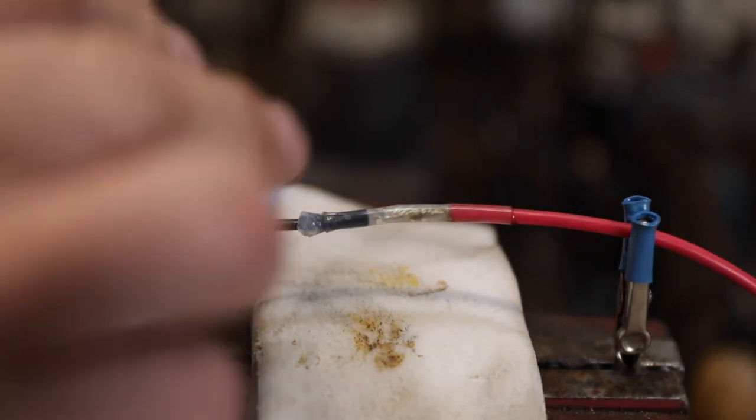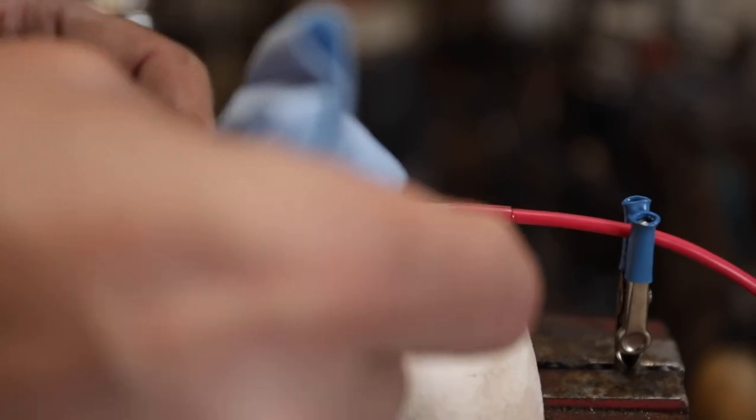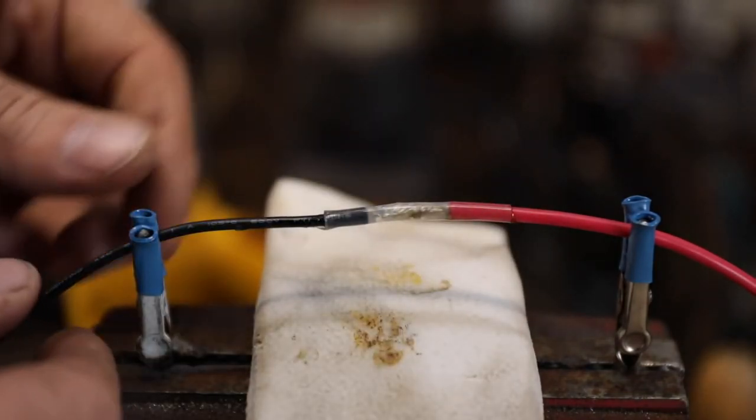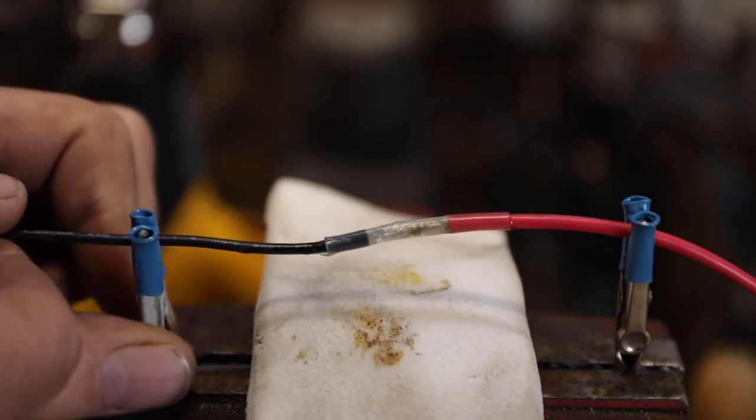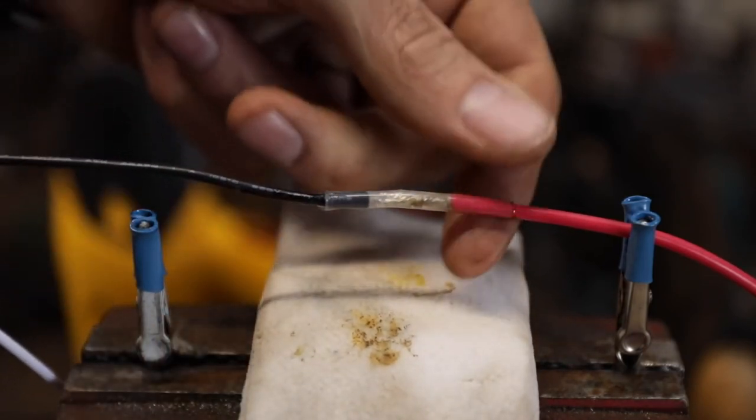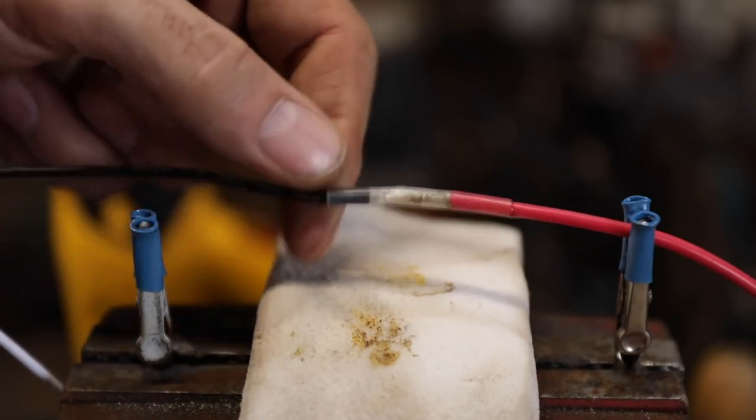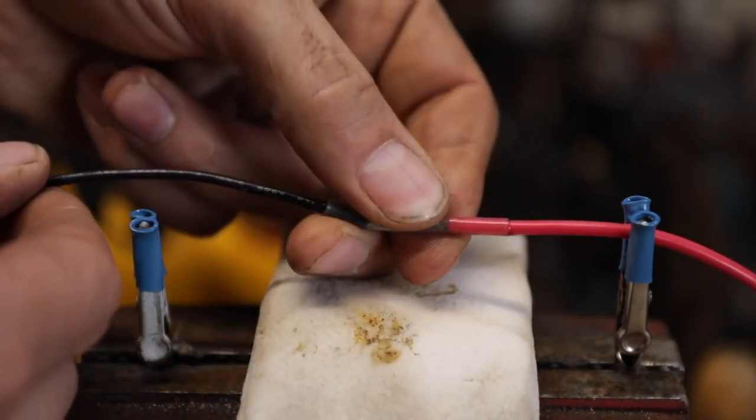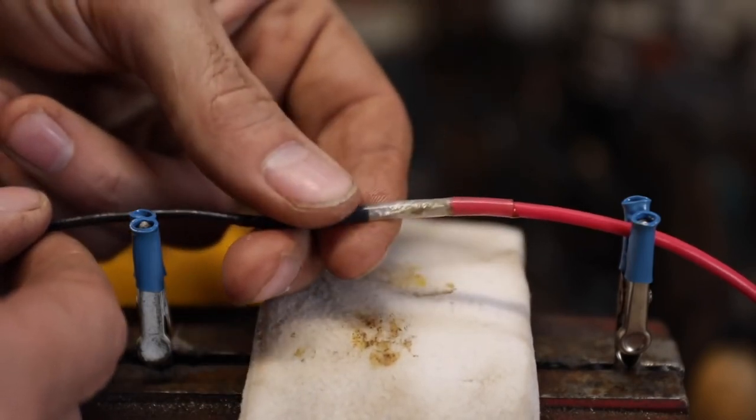Once that's cool to the touch, you can clean that silicone off there and you have a really good, as good as you're going to get, a waterproof connection for joining two wires together that's probably going to be tougher than the wire itself.